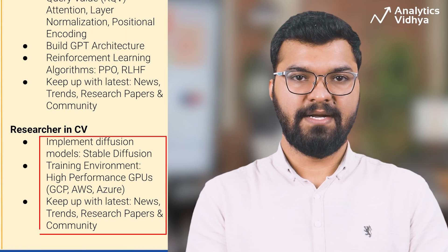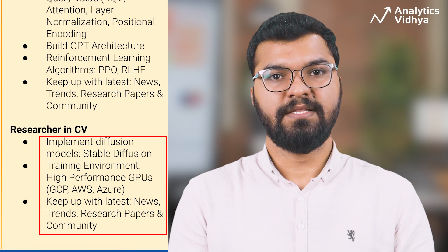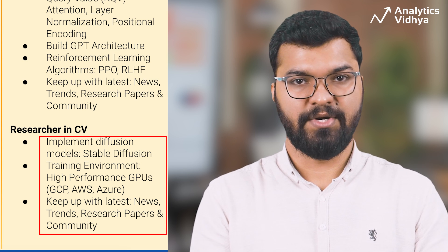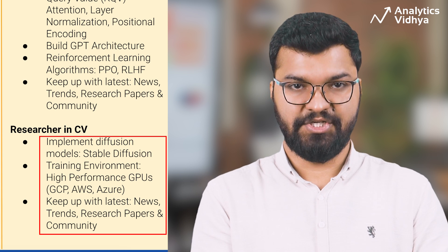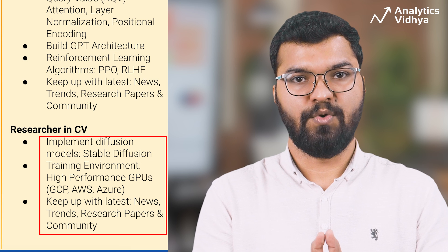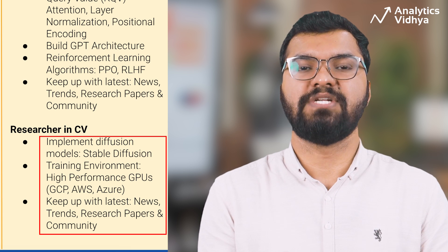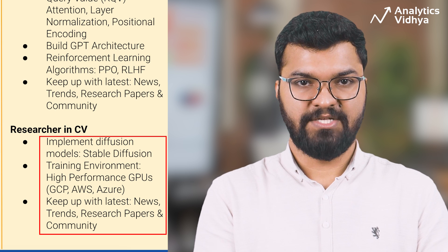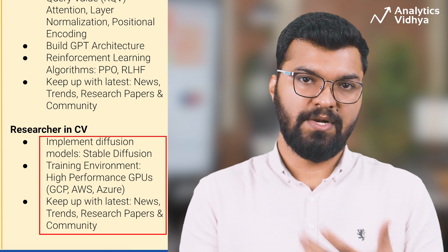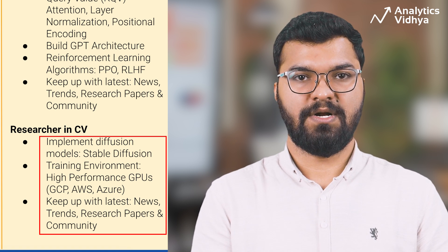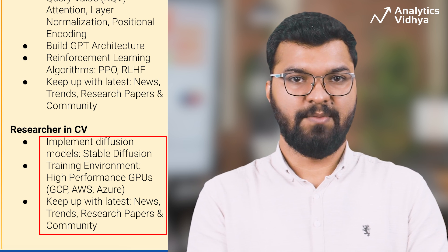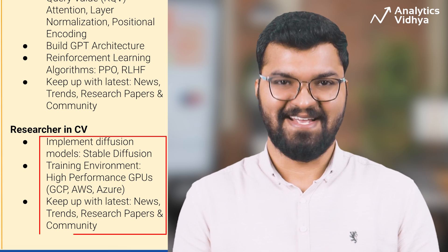For the computer vision researcher track: learn and implement diffusion models from scratch, like stable diffusion, which are at the forefront of generative AI for computer vision. Building them from scratch requires a much deeper understanding of deep learning and computer vision. Training generative models for computer vision can be computationally expensive, so you may need high-performance GPUs or cloud-based services. Keep up with the latest trends and research, participate in online communities, read papers, and attend conferences. As a researcher, you should contribute to the field by building your own models.